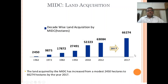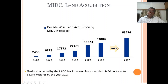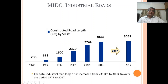Until 2017 MIDC had 66,274 hectares of land acquired. As of today it has crossed nearly 80,000 hectares of land acquired. The land acquired by MIDC has increased from a modest 2,450 hectares to about 80,000 hectares by the year 2020.